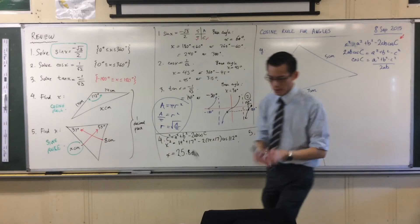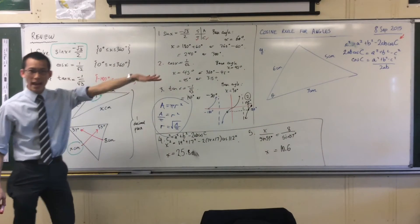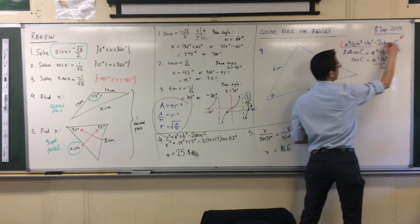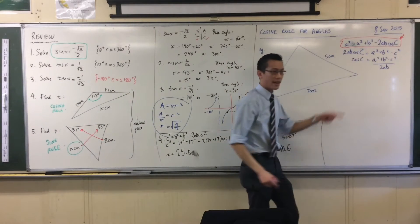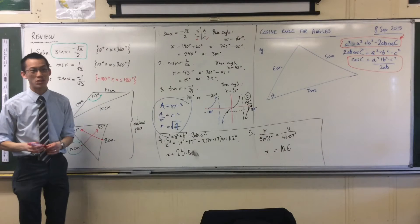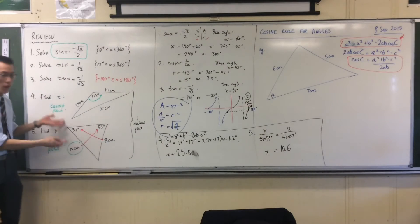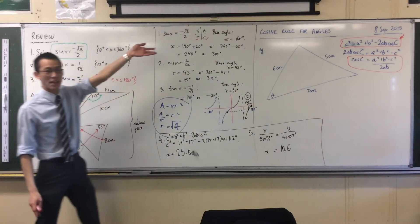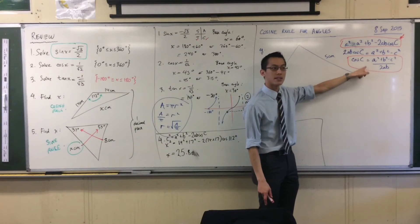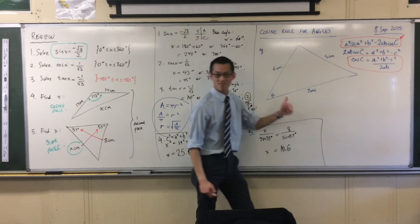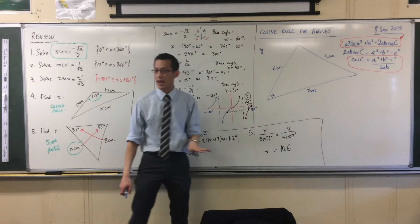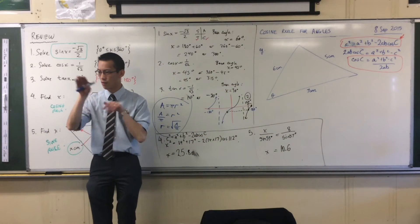So let's just pause for a second. What we've just written down is still the cosine rule — I started from the same spot. This is the cosine rule, and this last line is also the cosine rule, and you can use both. It depends on what you want to find. If I wanted to find a side it made sense to use the first one, but now I want to find an angle, so it makes sense to use the second one. I've got my formula written down, I've got my diagram, and now I just want to interpret it properly so I know what to fit where.